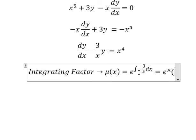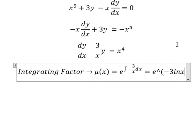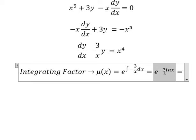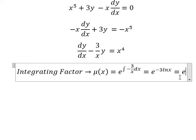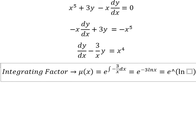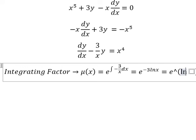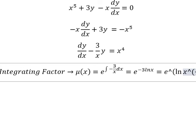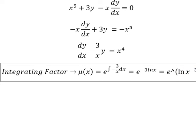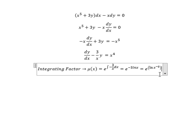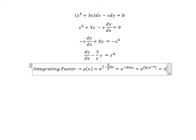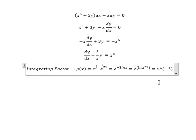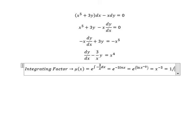The integration of this one, we have negative 3 ln x. And then negative 3 will go inside natural log here. And this one, we have x to the power of negative 3. And we can put into 1 over x to the power of 3.